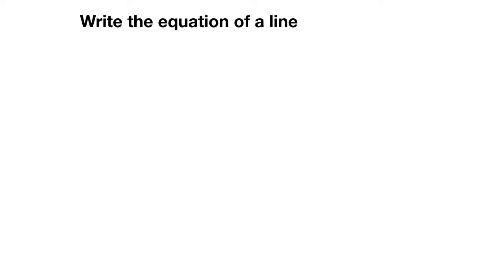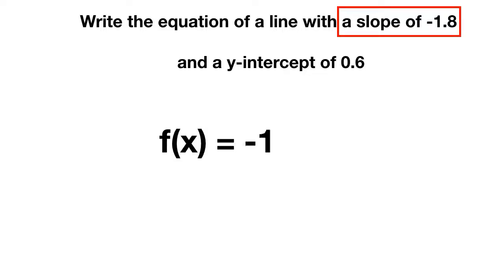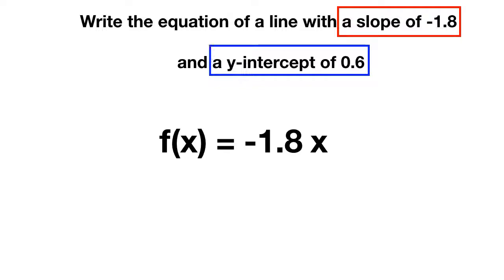Here's one more. Write the equation of a line with a slope of negative 1.8 and a y-intercept of 0.6. We can write f of x is equal to — the slope is negative 1.8, so negative 1.8x. The y-intercept is 0.6, so plus 0.6.